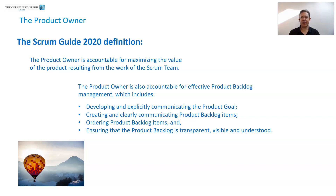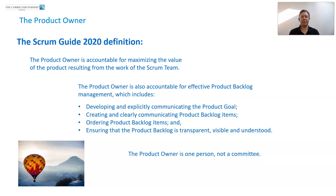That fourth line is really important: they need to ensure that the product backlog is understood. It's no point having a product backlog that is transparent and visible if nobody understands it. They need to make sure everybody involved in creating the product knows what is going on — communication is absolutely key. And importantly, the product owner is one person, not a committee.